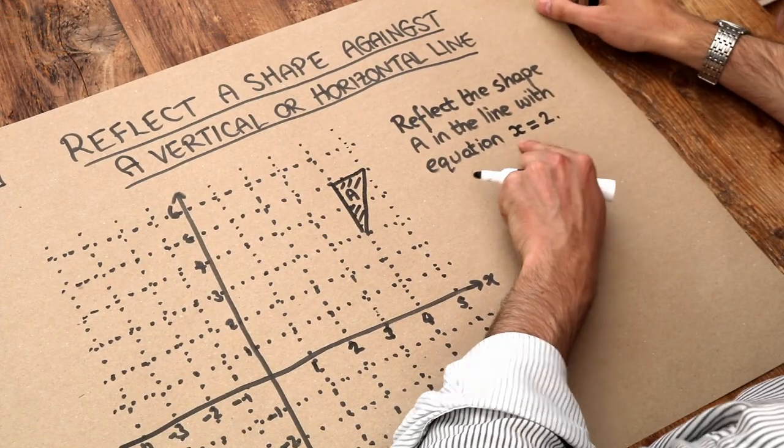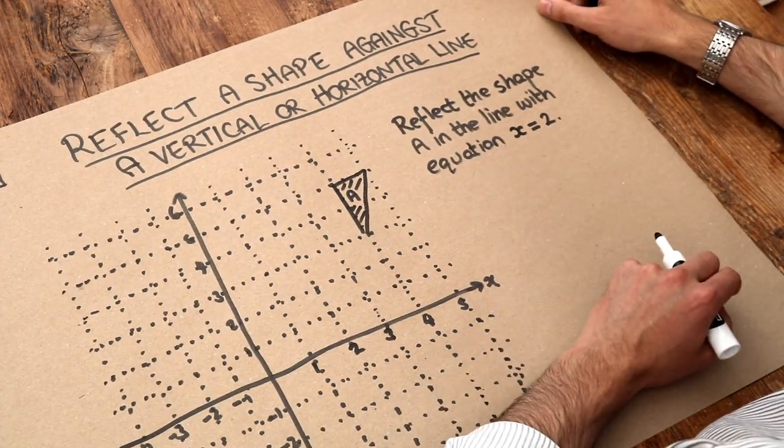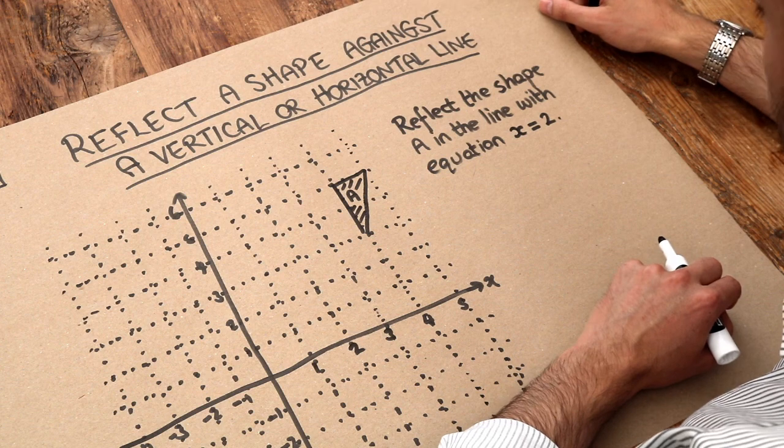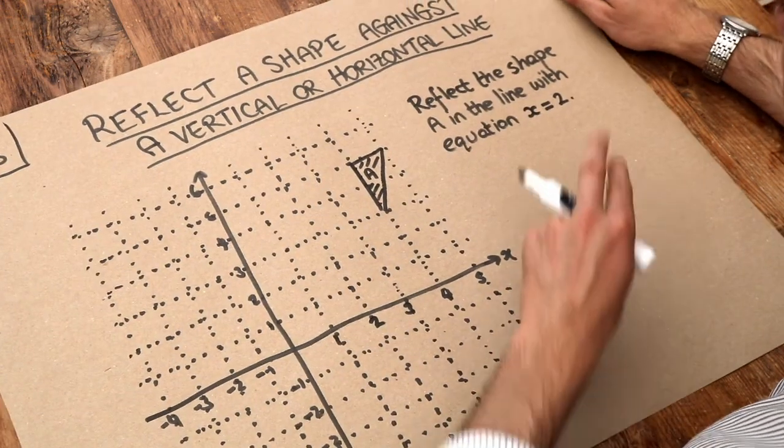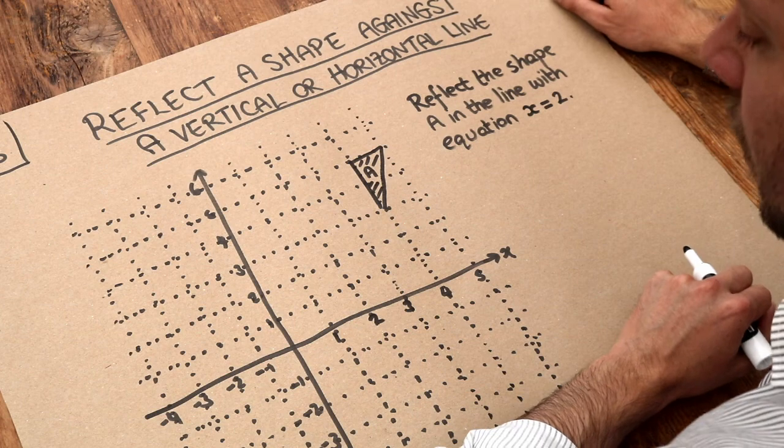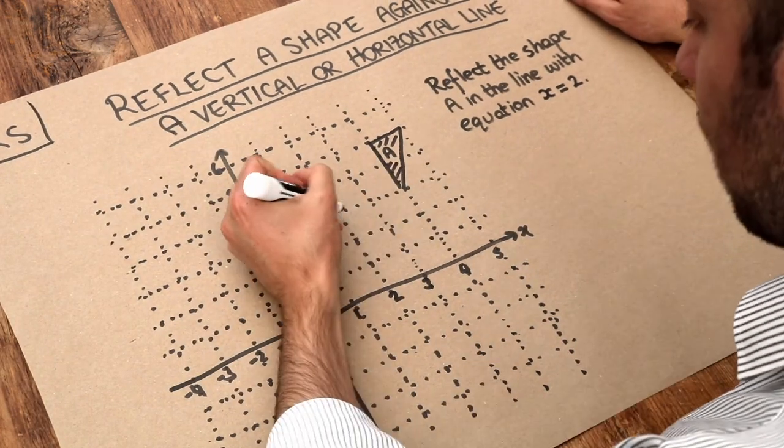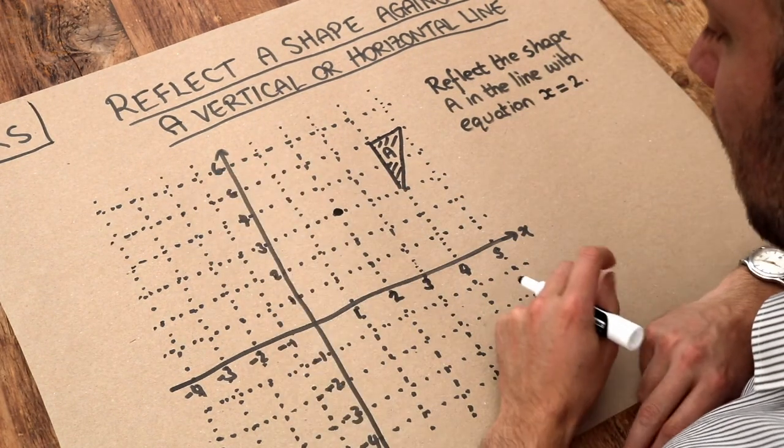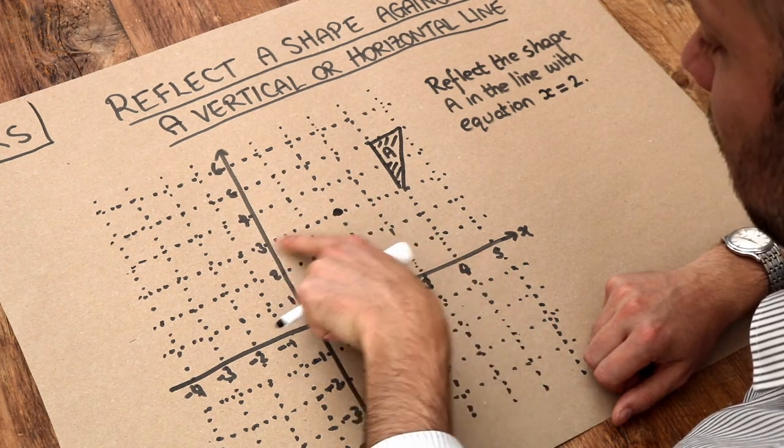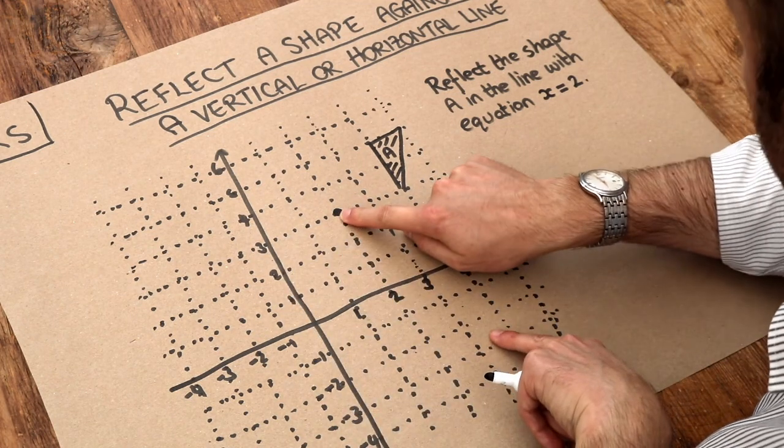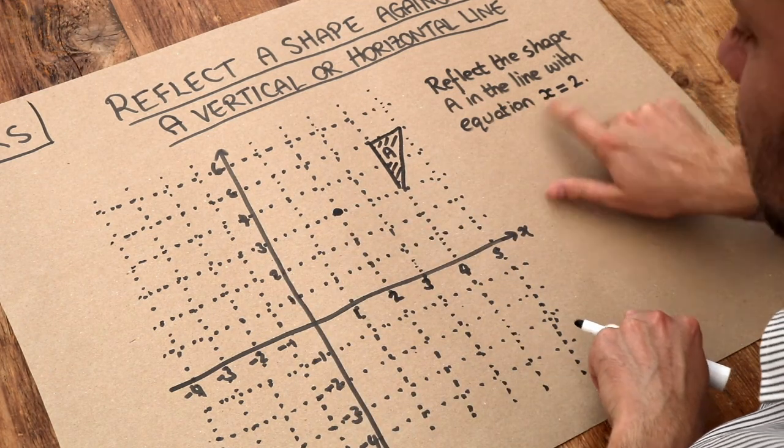So here our line of reflection is x equals 2. Now the way we draw the line x equals 2 is to just pick points where the x value is 2. So for example, I could pick this coordinate here, and can you see the x value is 2 here, the y value is 3, but we just care that the x value is 2 because we need the x value to be 2.